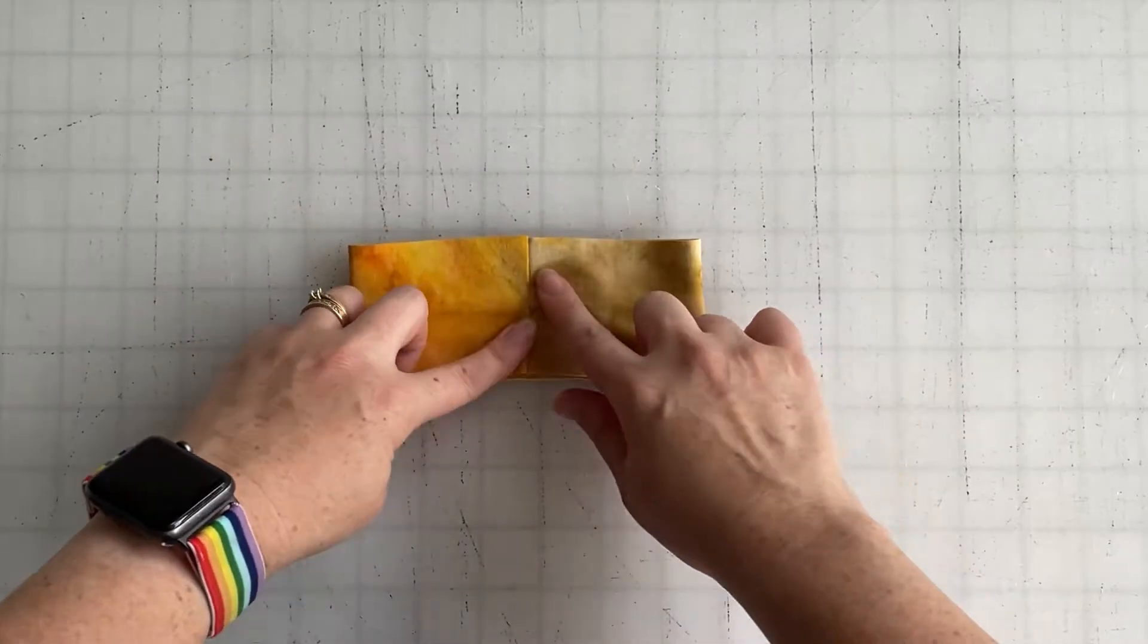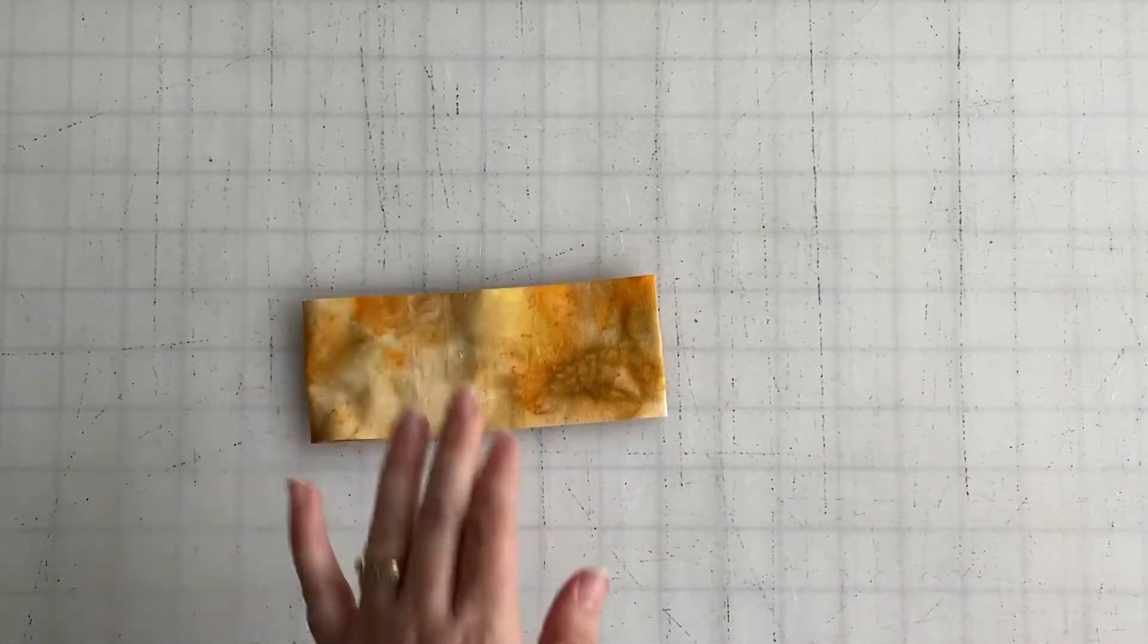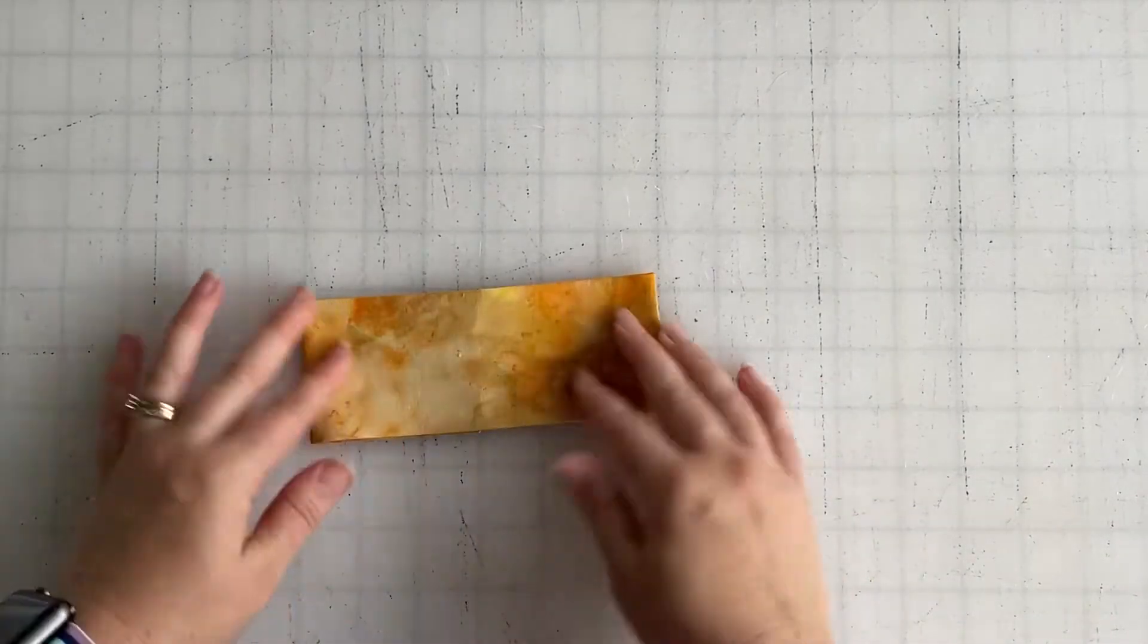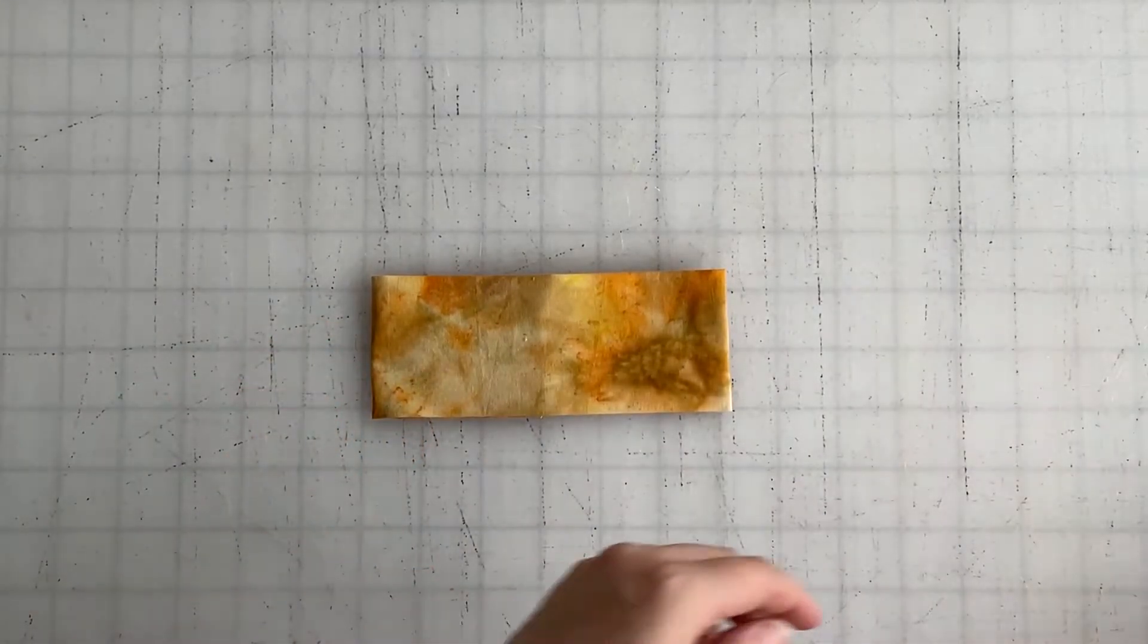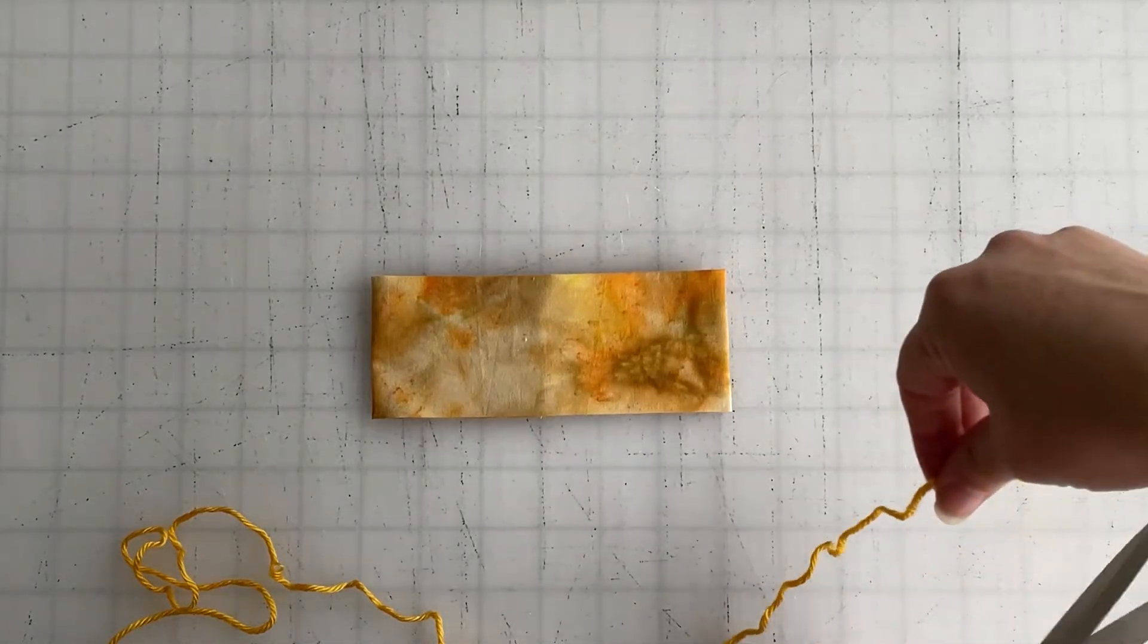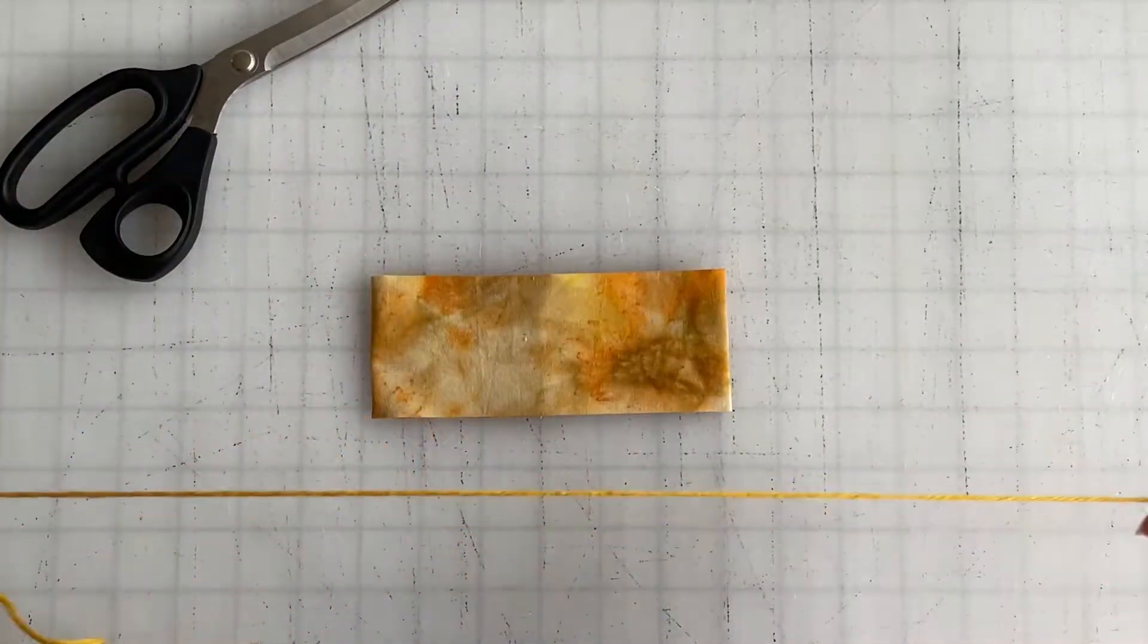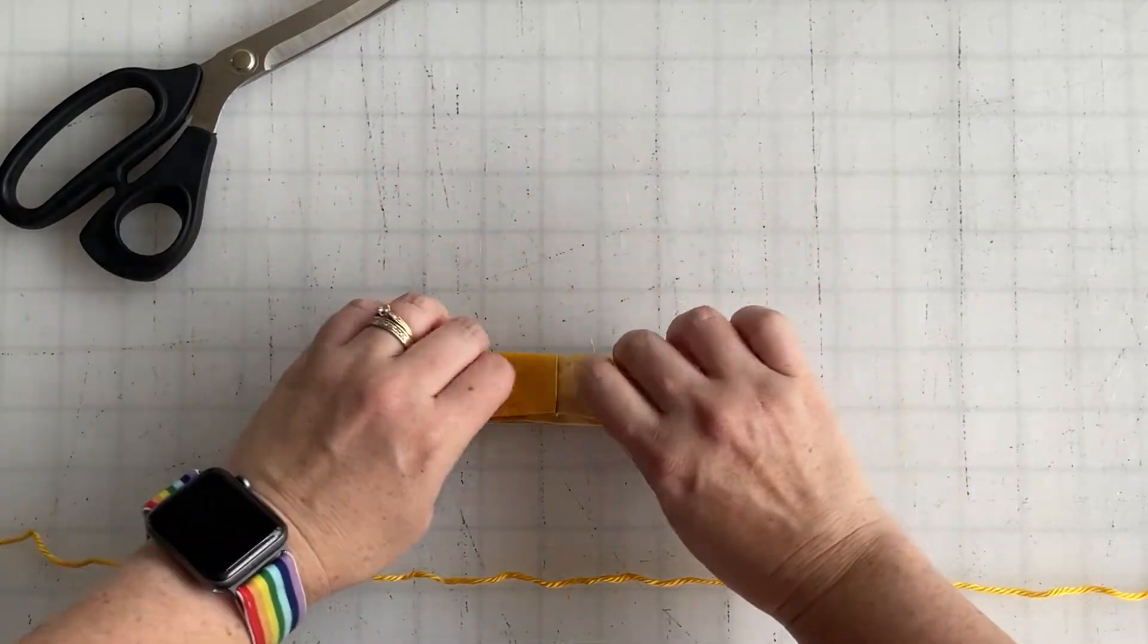To create the bow portion, we are going to be accordion folding this bow piece and you can tie it up however you like. I find it pretty easy to just use yarn. You just kind of want to accordion fold it, maybe start by folding it in half.